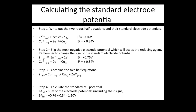Step 1: the two redox half equations and their standard electrode potentials are given as reductions. We have Zn²⁺ + 2e⁻ → Zn(s) with a standard electrode potential of minus 0.76 volts, and Cu²⁺ + 2e⁻ → Cu(s) with a standard electrode potential of plus 0.34 volts.